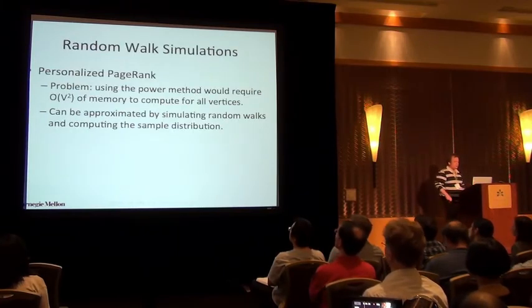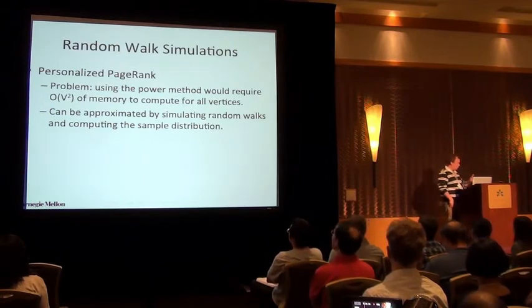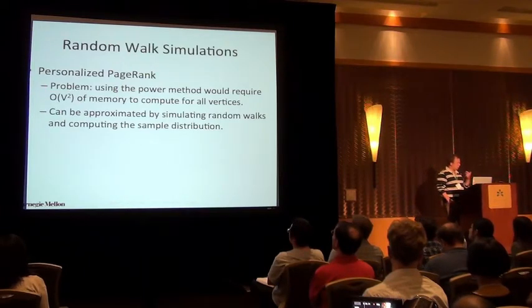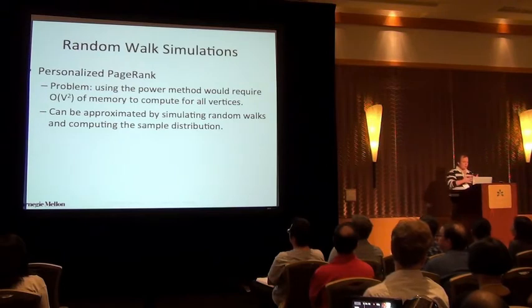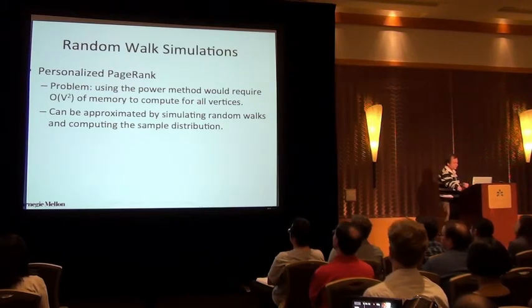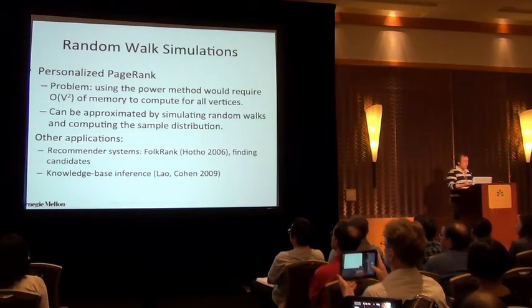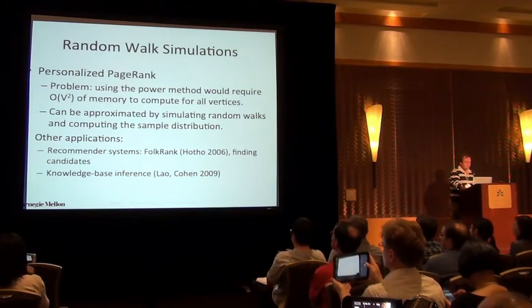So, actually, we just had, I think, three talks where random walks were mentioned. The Google talks and Pankaj talk, at least. And the canonical algorithm for random walks is personalized page rank. So, you want to compute recommendations for each user and to simulate page rank, you actually simulate actual random walk particles. So, some other applications as well in the recommender systems, such as FolkRank and in knowledge base inference done at CMU.